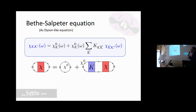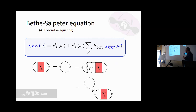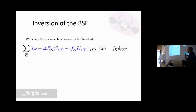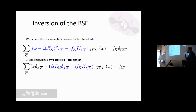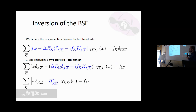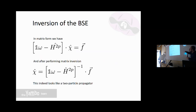To actually solve this, we need to invert it: we want χ equal to something that doesn't contain χ on the right. This leads to the excitonic Hamiltonian. We move everything with χ to one side — we can see a matrix with a diagonal non-interacting part and the electron-interaction kernel — this is already the two-particle Hamiltonian. After matrix inversion, we have an expression of the form one divided by omega minus the Hamiltonian, which formally resembles a Green's function or propagator.